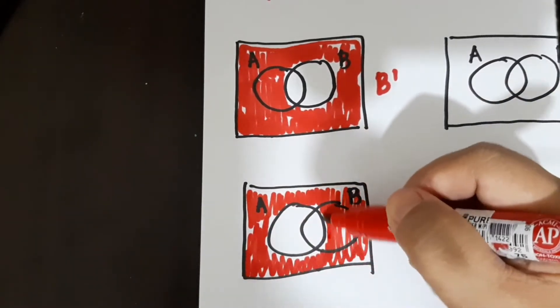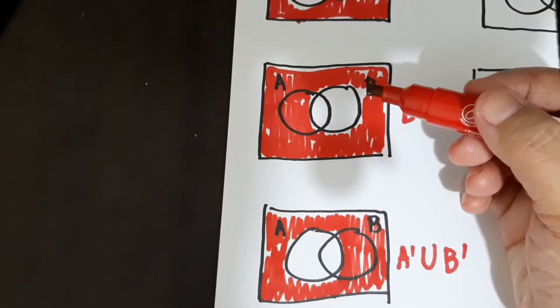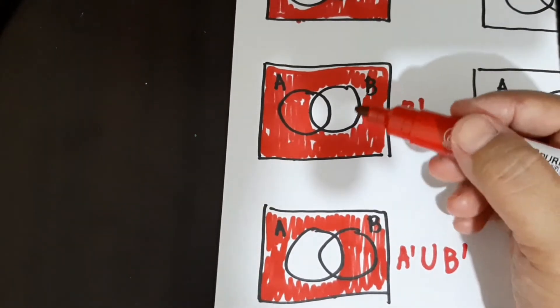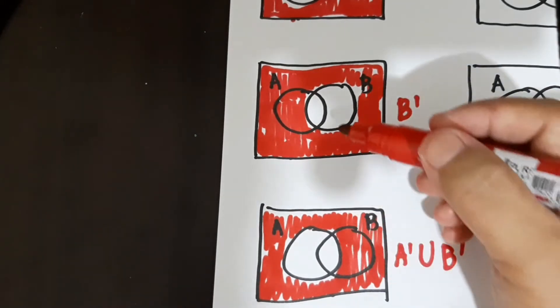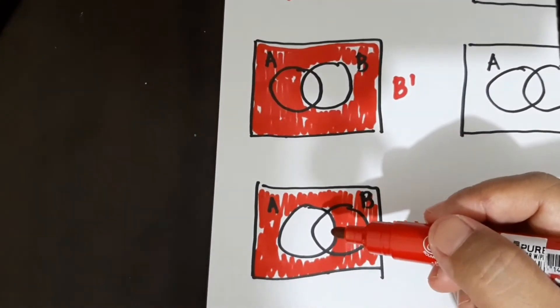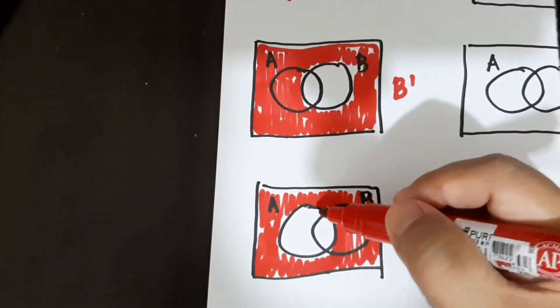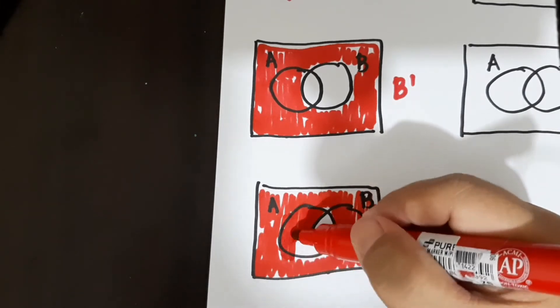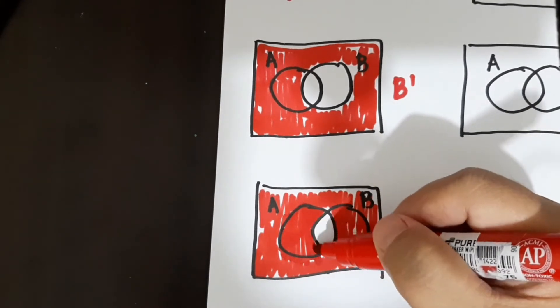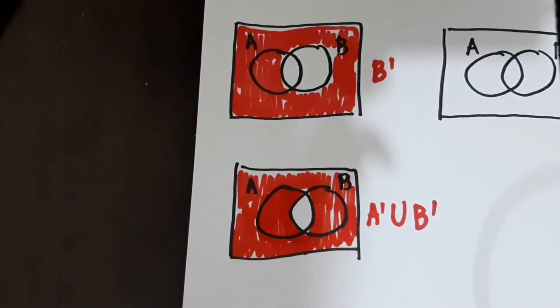And then, pangalawa, ito naman. So ang may shade naman dito ay yung, walang shade pala yung B lang. Yung B. So ang itatransfer natin sya dito, alin na lang yung walang, alin na lang yung dapat shadean, yung itong part na ganito. So dapat dito may shade sya kasi union to.